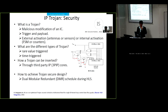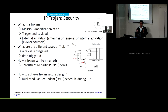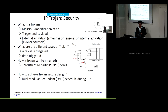Let us look into the first type of threat model in detail. What is an IP Trojan? An IP Trojan is a malicious modification by an adversary or rogue element to an IP or IC. The two major aspects of an IP Trojan are trigger and payload. Trigger refers to how to activate the Trojan silently so it starts to create unwanted functioning in the system, whereas payload refers to what the effect of triggering would be.